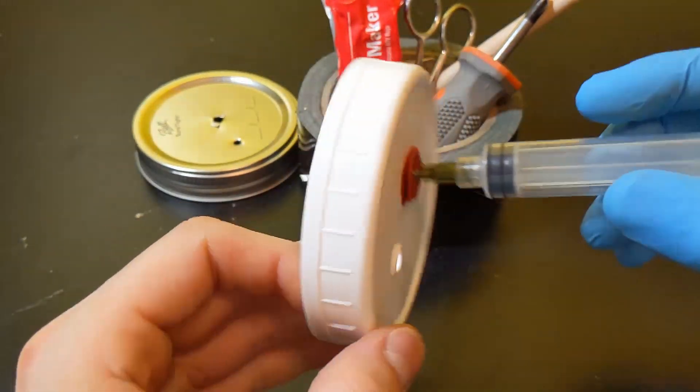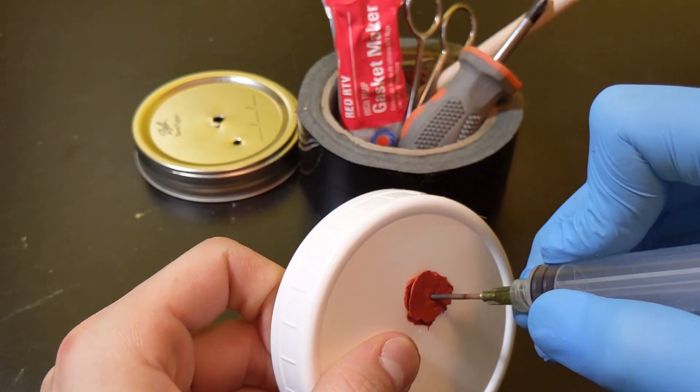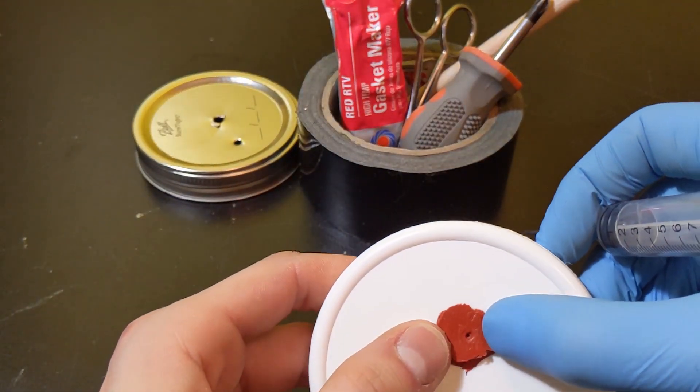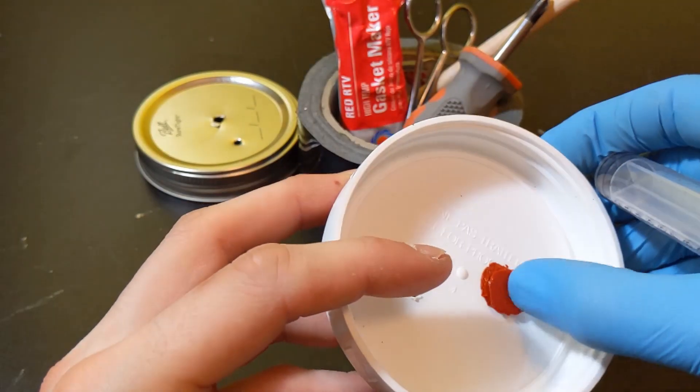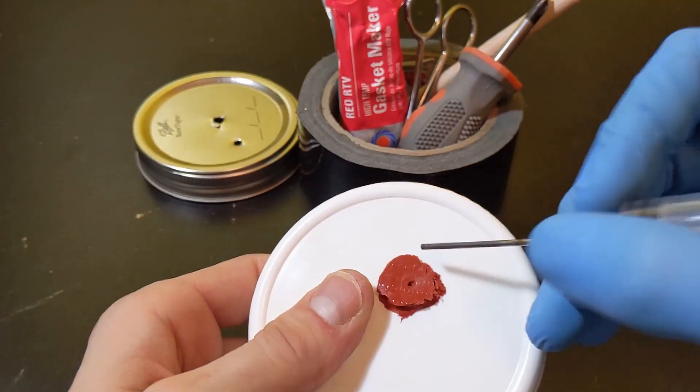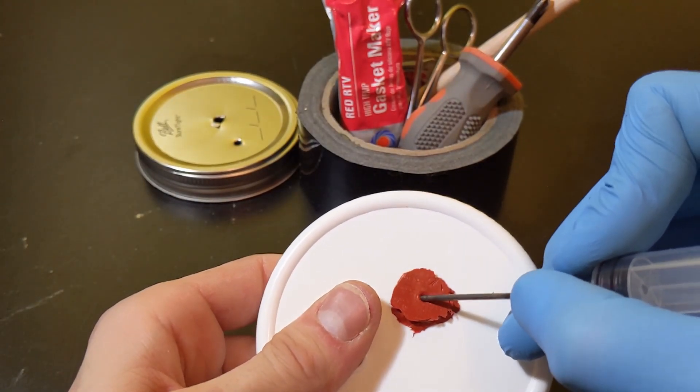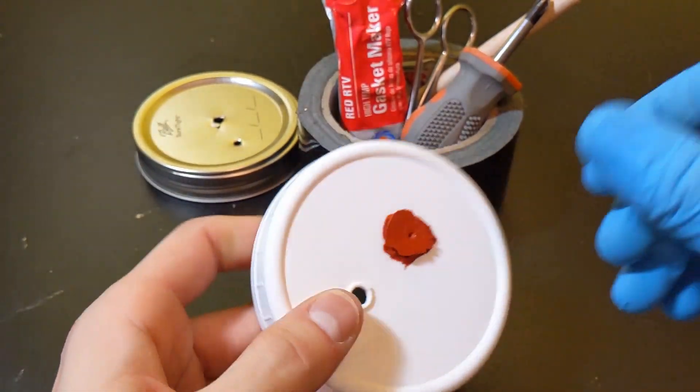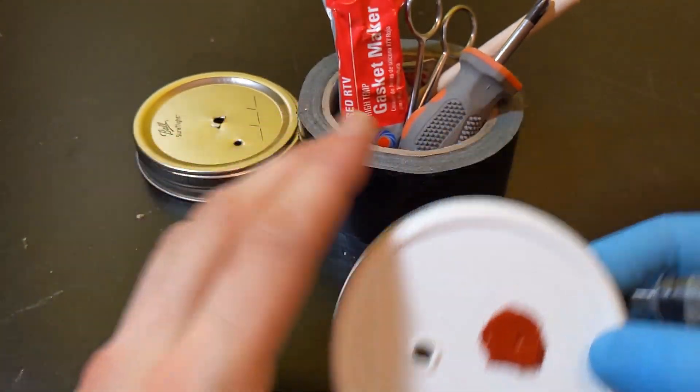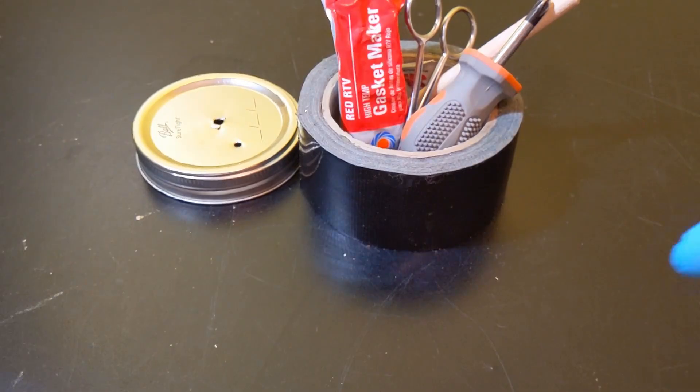So as you can see what this allows you to do is if you're using for example a syringe or like a liquid culture, you can go in the inoculation port and come out and what it does is it will close back up on its own and that really limits the amount of time that there could possibly be contamination. And by adding a second hole we can then add our filter.